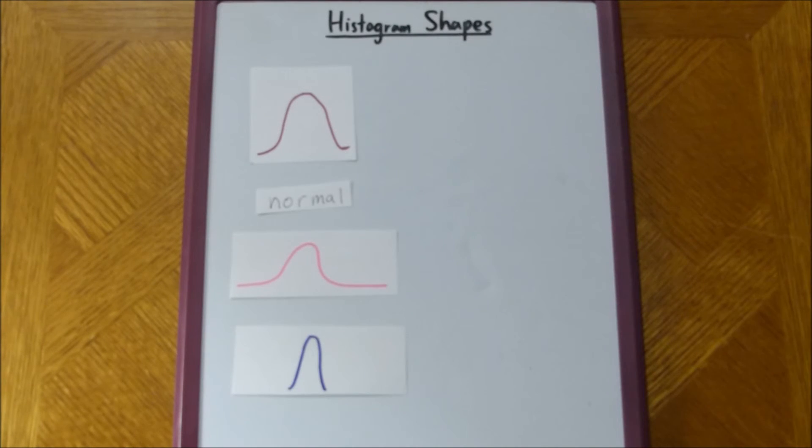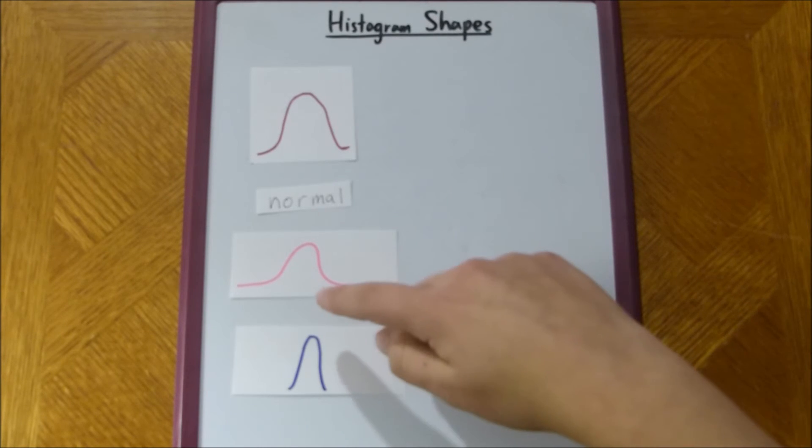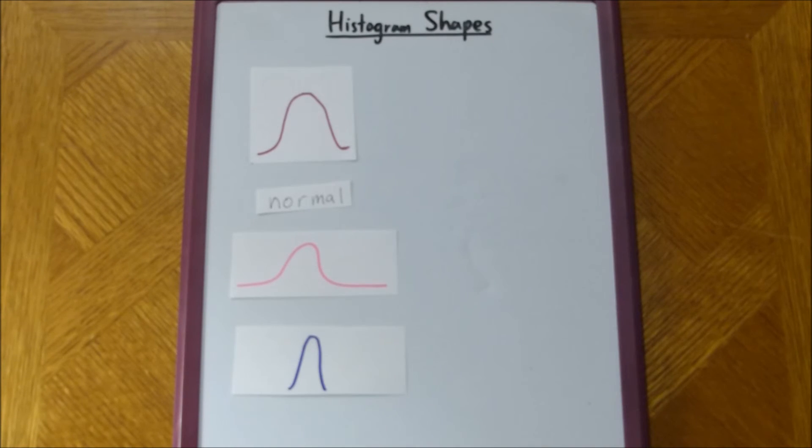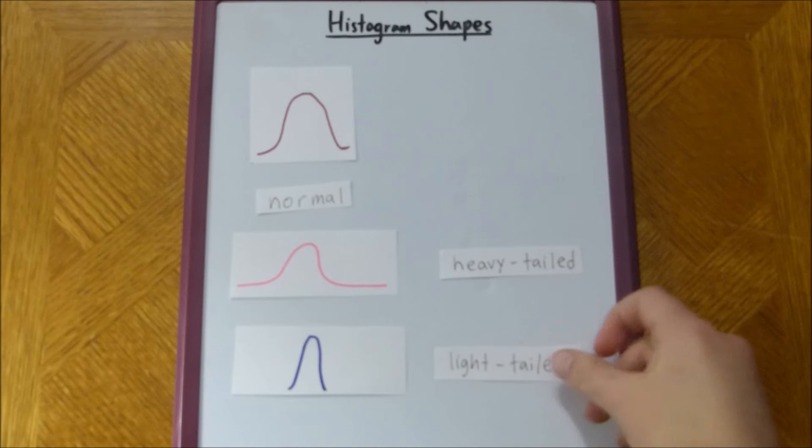So, as you can see, there's a lot of differences between this one, this one, this one, and that one, because, and it all has to do with the lower and upper tails. And we call this one heavy-tailed, and we call this one light-tailed.